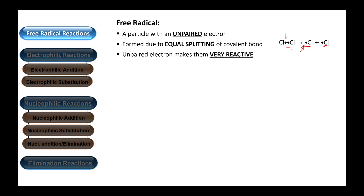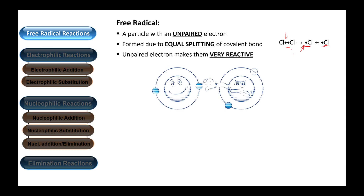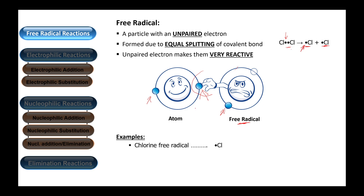It is this unpaired electron which makes a free radical very reactive. To have a better understanding, we can look at this figure. On the left hand side we have a normal atom with two electrons in its outer shell, while on the right hand side we have a free radical with only one electron, always trying to steal electrons from another atom, which makes it really reactive. Some common examples of free radicals include the chlorine free radical, hydroxyl radical, and superoxide anion.